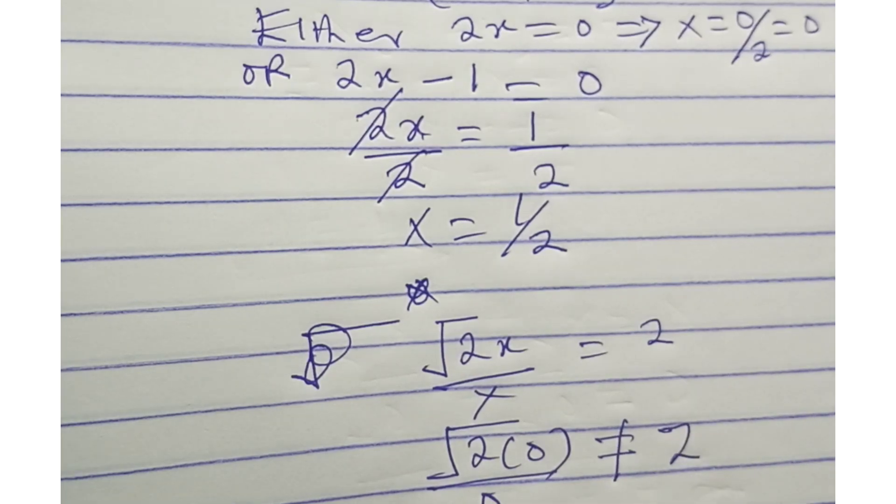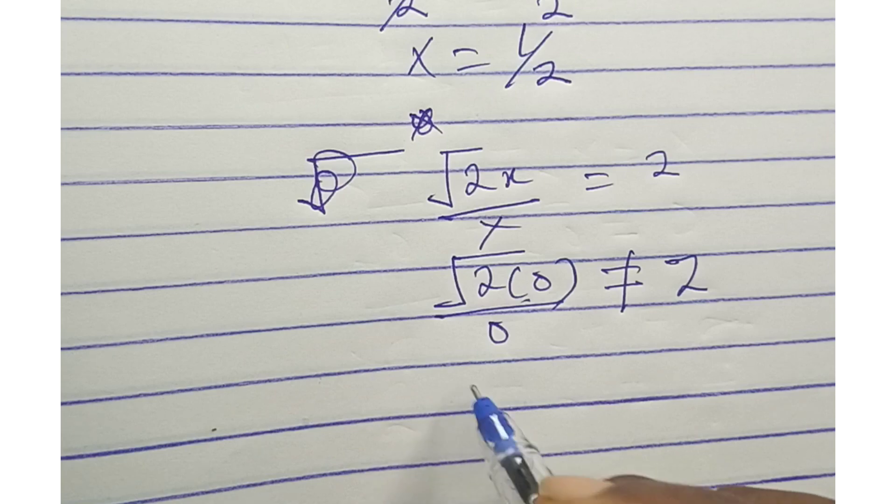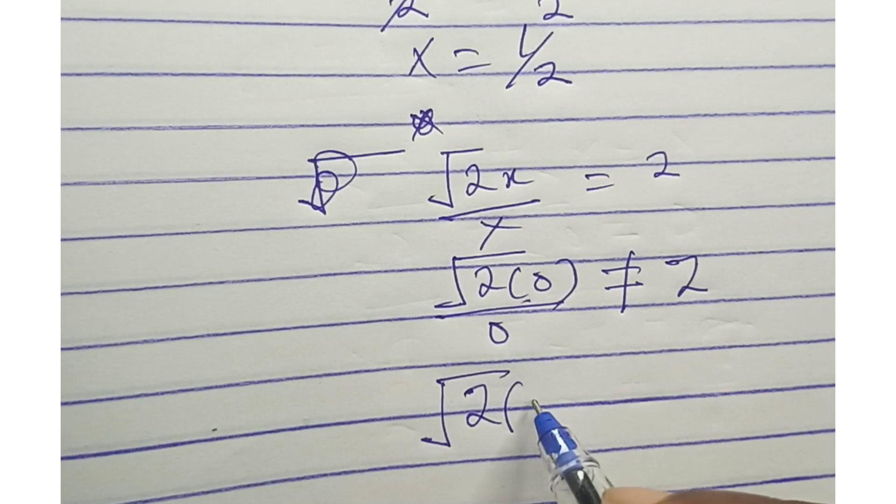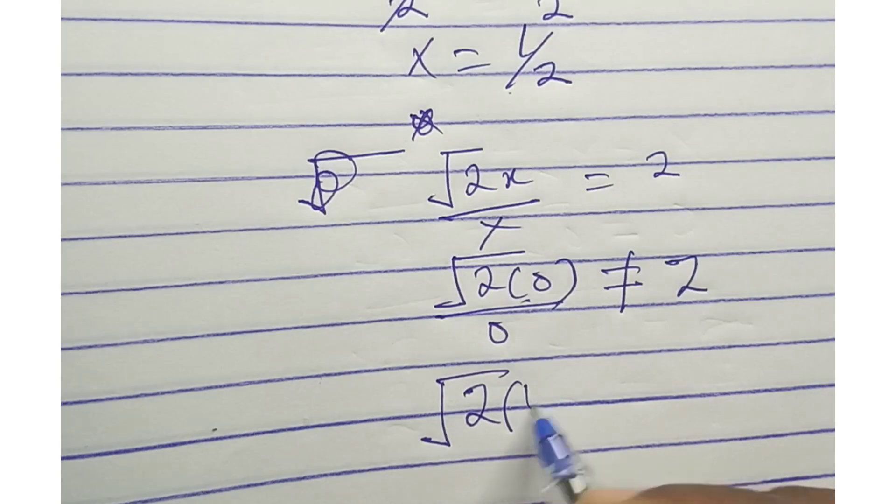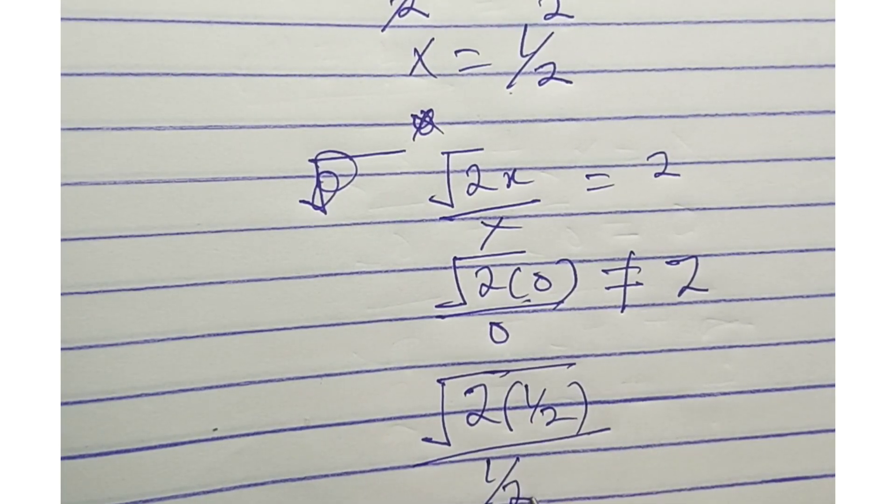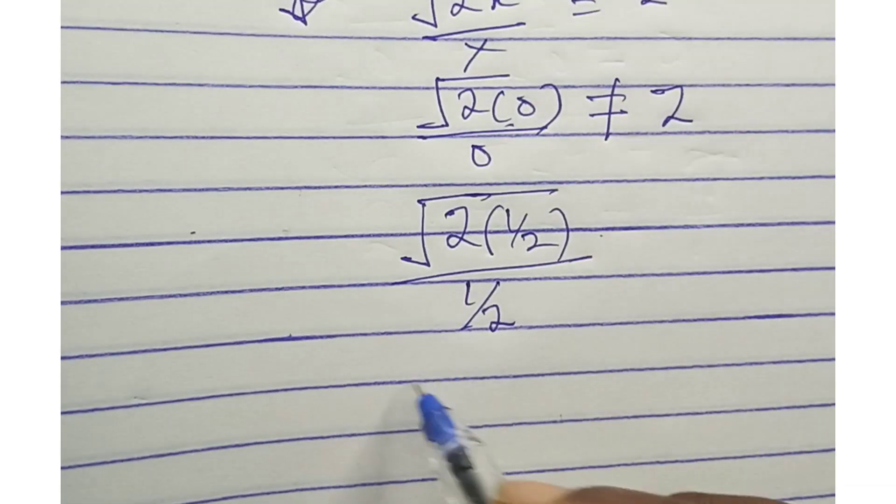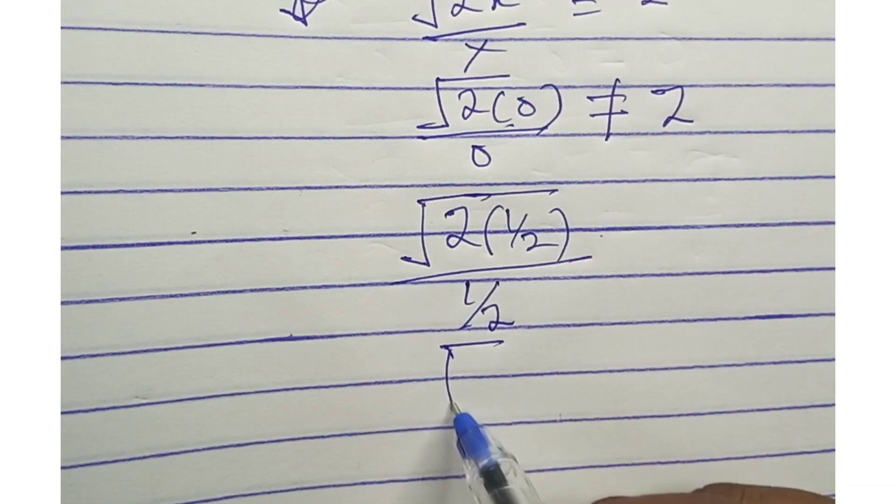In the second one we have root 2 bracket. The second solution was 1 over 2, 1 over 2 into 1 over 2 here. What will it give you? We're going to have root 2.